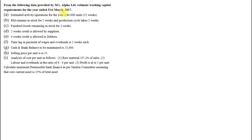We start with the very first one: from the following data provided by Measure Alpha Limited, estimate the working capital requirement for the year ending 31st March 2017. The estimated activity is 2 lakh 60,000 units for the entire year (52 weeks). Raw material remains in stock for two weeks, production cycle takes two weeks, finished goods for two weeks, two weeks for supplier, four weeks for debtors, and time lag in payment of wages and overhead is two weeks.